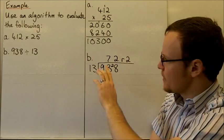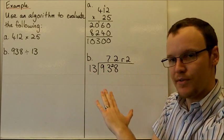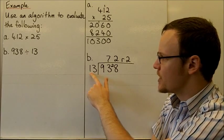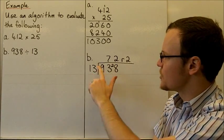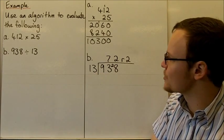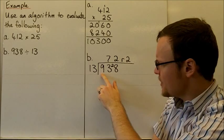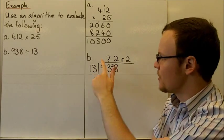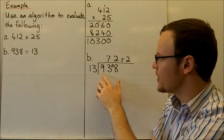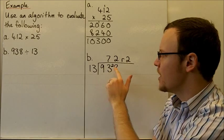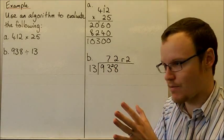For the second part, using the short division algorithm: 938 ÷ 13. Notice the dividend is inside and the divisor is outside. Looking at 9, 13 doesn't go into 9—it goes in zero times, so there's nothing above. But for 93, 13 goes into 93 seven times with 2 left over, so a remainder of 2.